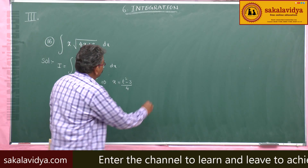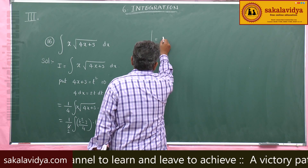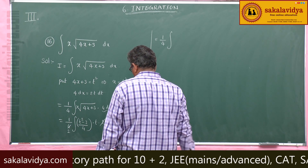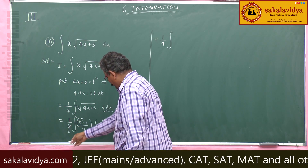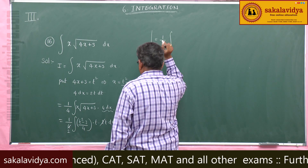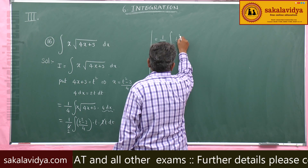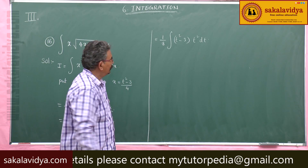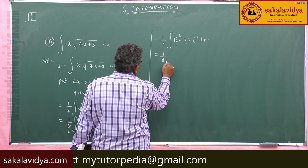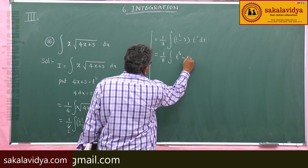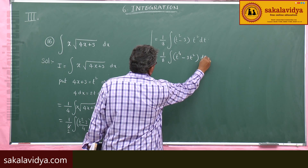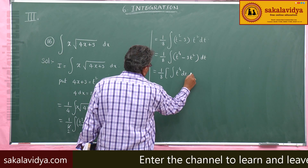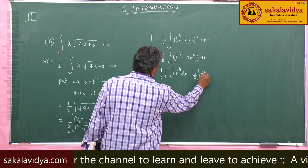Taking 1/4 as common outside, and combining with the factor from 2t dt, we get 1/8 integral of (t² minus 3) multiplied by t · t dt, which is 1/8 integral of (t⁴ minus 3t²) dt. This separates as 1/8 integral t⁴ dt minus 3/8 integral t² dt.